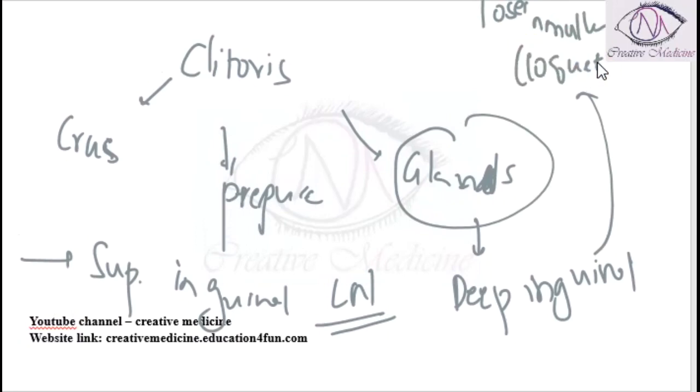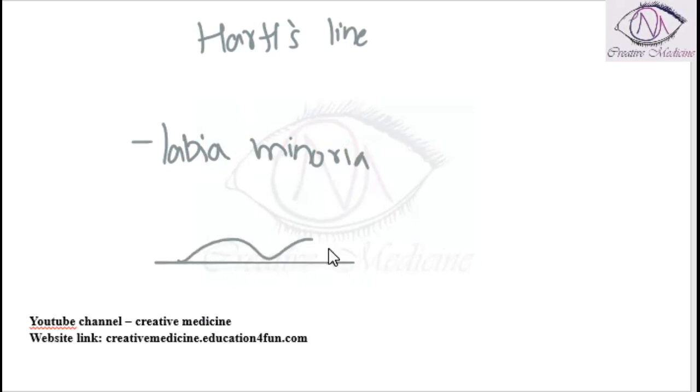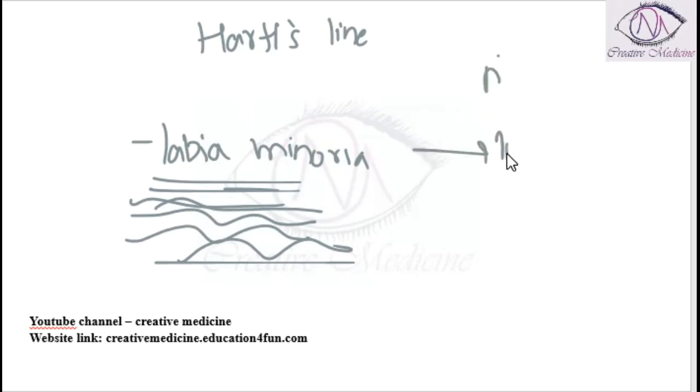There is a line called Hart's line. Hart's line is the outer line of the labia minora and is lined by keratinized stratified squamous epithelium. The medial or inner side of the labia minora is lined by non-keratinized stratified squamous epithelium.